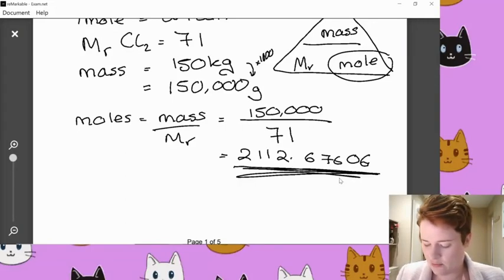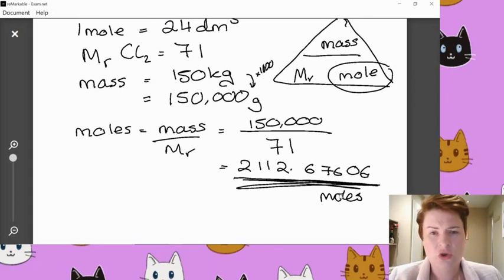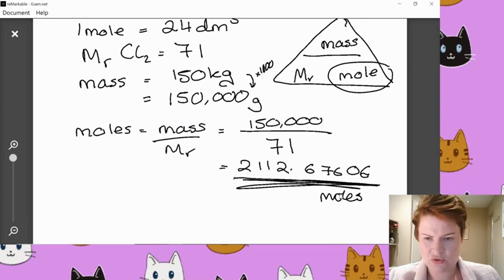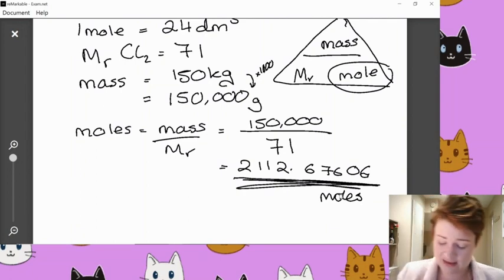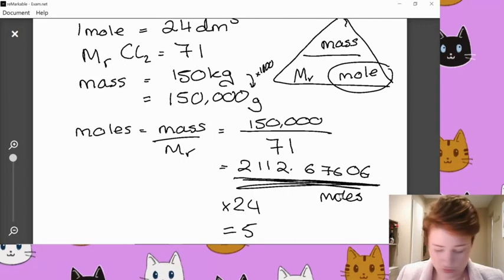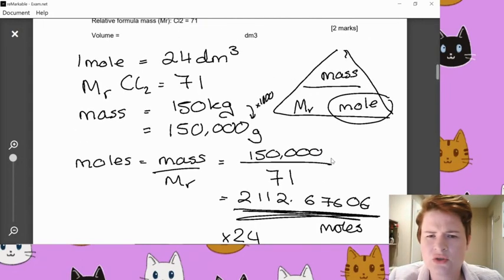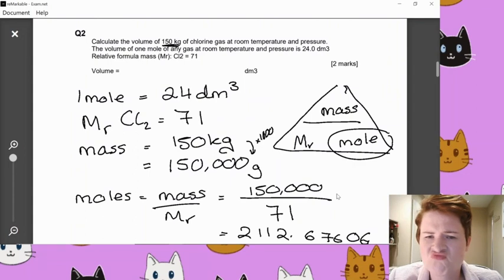So that's how many moles we've got. That weird number there is the number of moles. And we need to work out the volume that that number of moles actually takes up. So before we saw that one mole takes up 24 decimetre cubed. We've not got one mole. We've got 2112.67606 blah, blah, blah on my calculator. So let's just times that by 24. One mole equals 24 decimetres. So if we just times it by 24, it'll get us the volume for that.